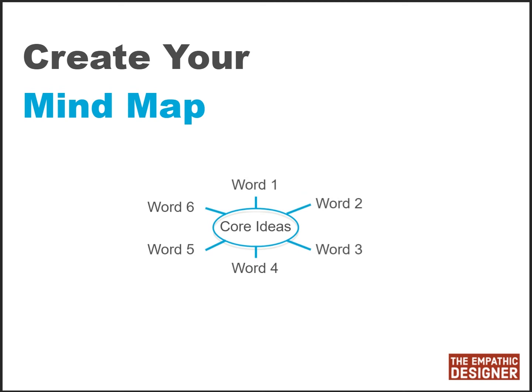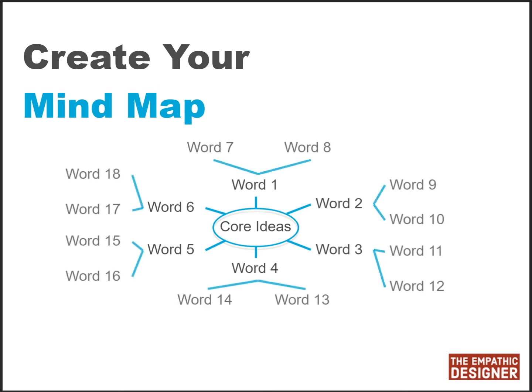The next step is to branch this further to write two to three more words associated with each of the five to six words you had come up with in the previous step. This will result in the creation of a central region of your mind map.